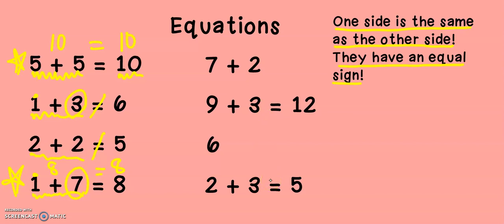Let's look at the last four over here. Seven plus two. That seems a little short, doesn't it? I remember over here that an equation has an equal sign. Does this have an equal sign? No, so this one is not an equation. Nine plus three equals 12. Okay, we have the equal sign. That's a good start. Let's check and see if both sides are the same. Nine, ten, eleven, twelve. Twelve is equal to twelve. That is an equation. Next is just the number six. Is six an equation? No, six is just a number. There's no equal sign, so it's not an equation.